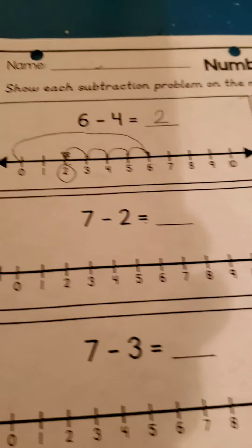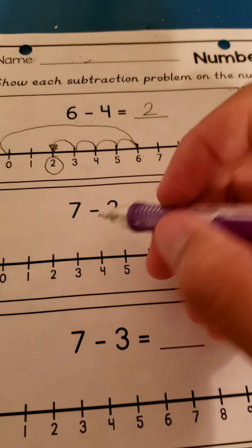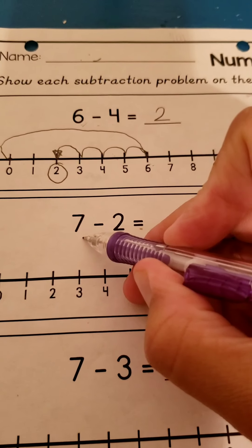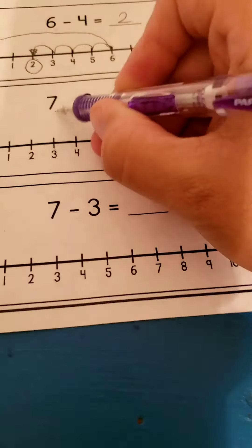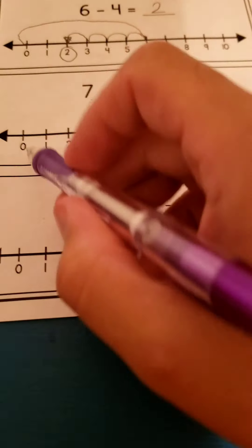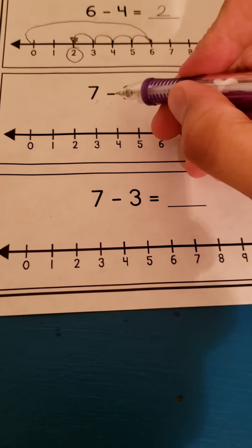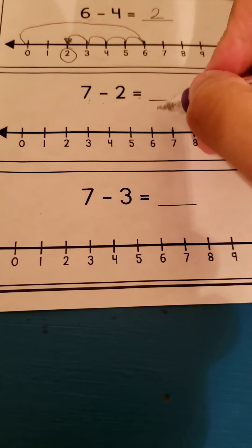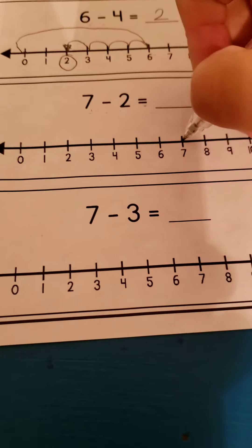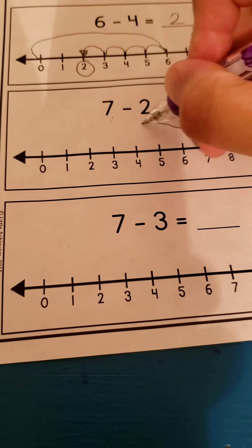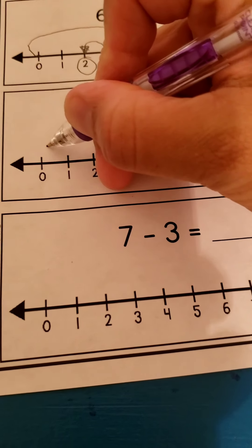Let's go to the next one. First thing you do is you find number seven on your number line. Seven minus two. Where is that seven? Here. And since you're subtracting, you're gonna make a giant line all the way to zero. That shows me that you're subtracting.